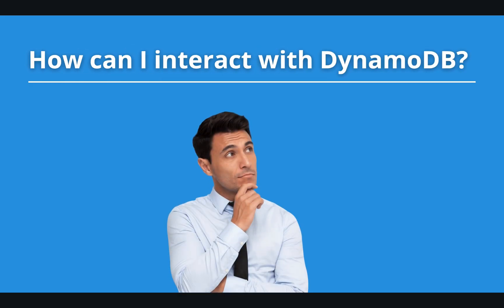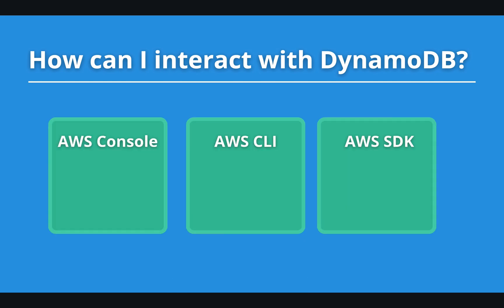The last question you may ask yourself is how you can interact with DynamoDB. The answer is simple — you have three options: you can use the AWS console, AWS CLI, or the AWS SDK of your preferred programming language. Now, having that knowledge, let's move to the demo and see DynamoDB in action.